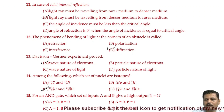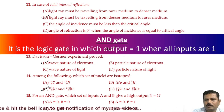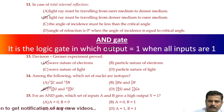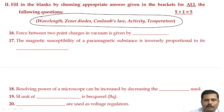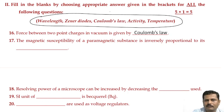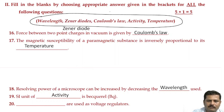For an AND gate, which set of inputs A and B give a high output Y = 1? The AND gate is the logic gate in which the output equals 1 when all inputs equal 1. So our answer is option D. For the fill-in-the-blank questions: the force between two point charges in vacuum is given by Coulomb's law. The magnetic susceptibility of paramagnetic substances is inversely proportional to temperature. The resolving power of a microscope can be increased by decreasing the wavelength used. The SI unit of activity is becquerel. Zener diodes are used as voltage regulators.